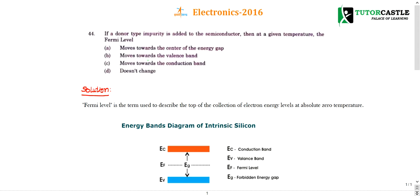Question number 44: if a donor-type impurity is added to a semiconductor, then at a given temperature the Fermi level will — options: more towards the center of the energy gap, more towards the valence band, more towards the conduction band, or does not change. This is a simple, direct concept-based question that comes up frequently. I'll explain how to solve it in an easy way, and cover a few more points beyond this question.